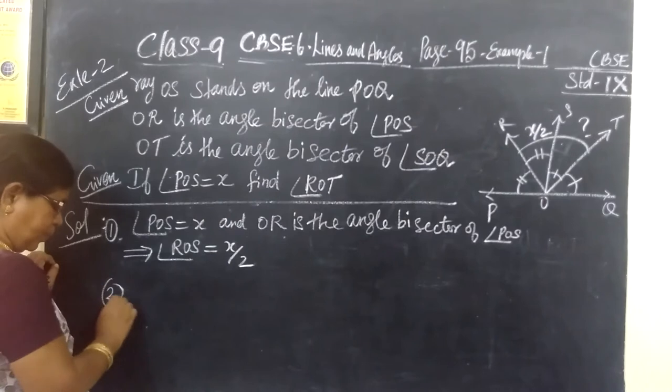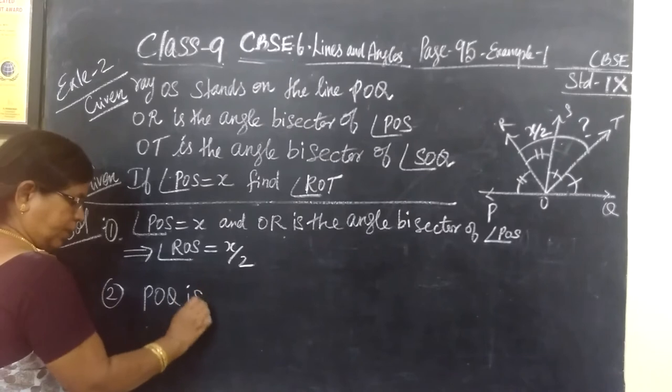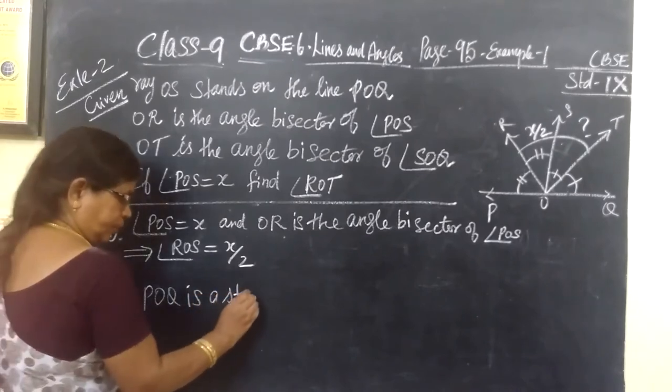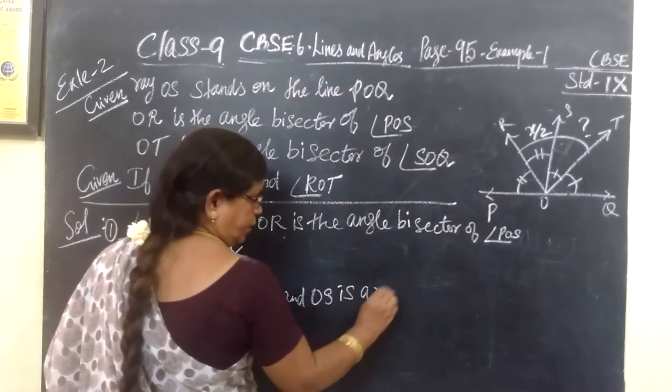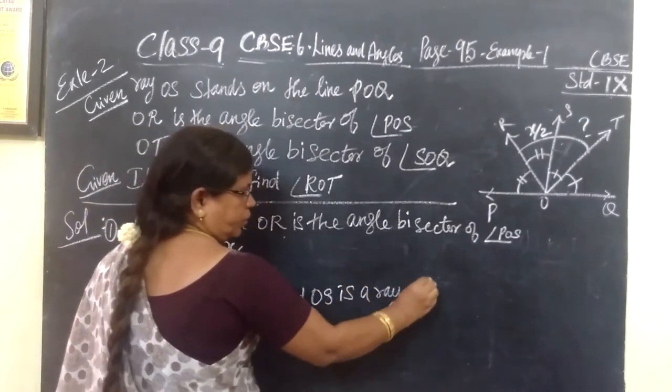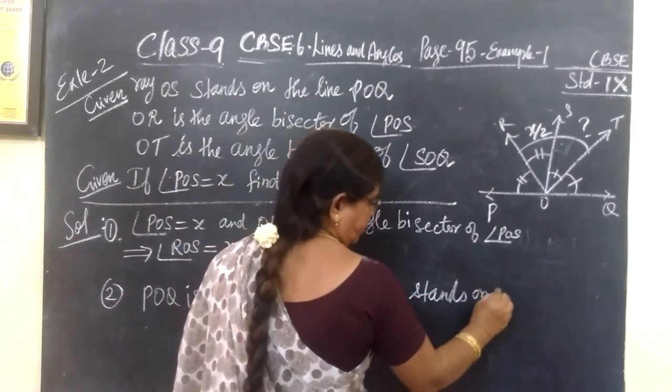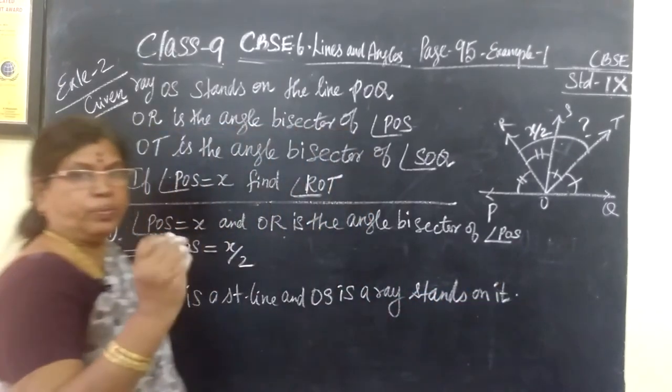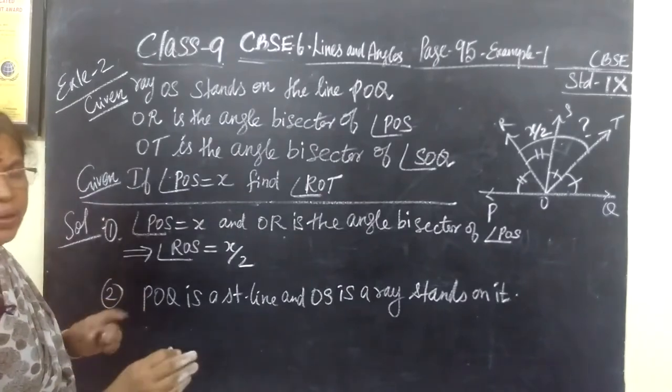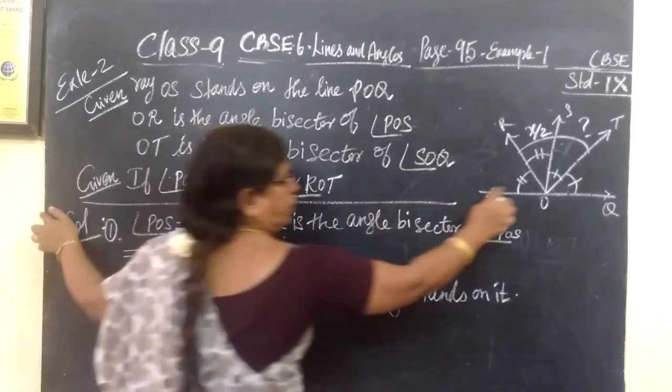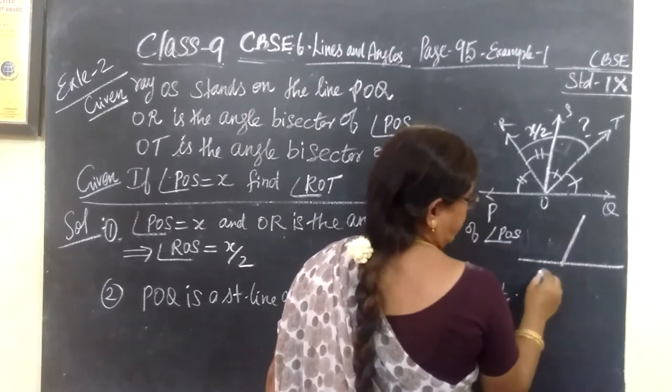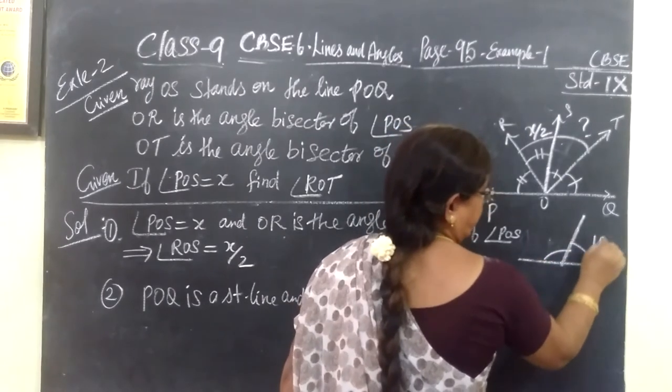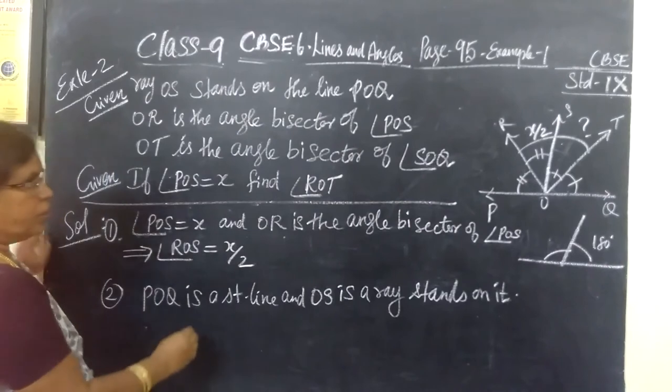And second part. We know POQ is a straight line, and OS is a ray standing on it. So sum of these two angles is a straight line. So sum of these two angles is equal to 180 degrees. So which angles?